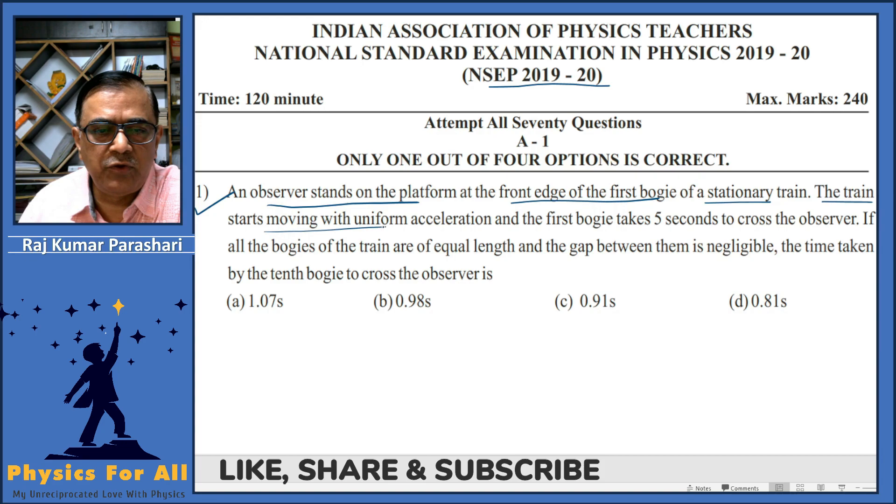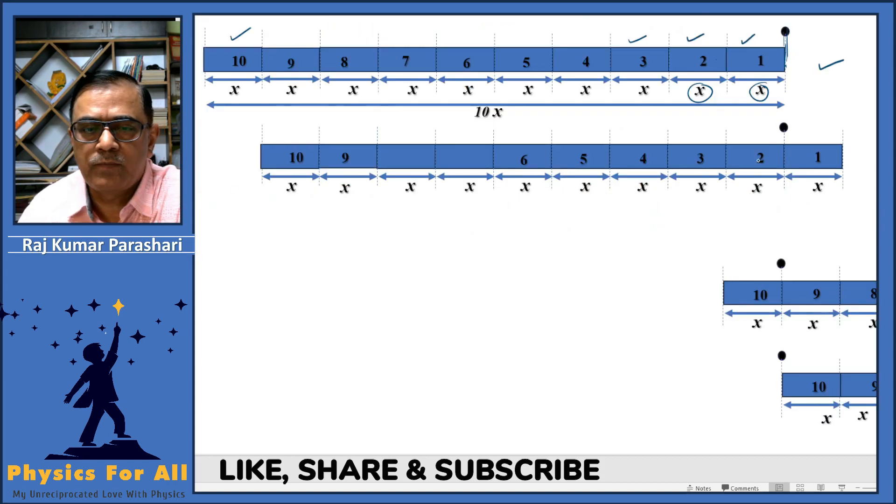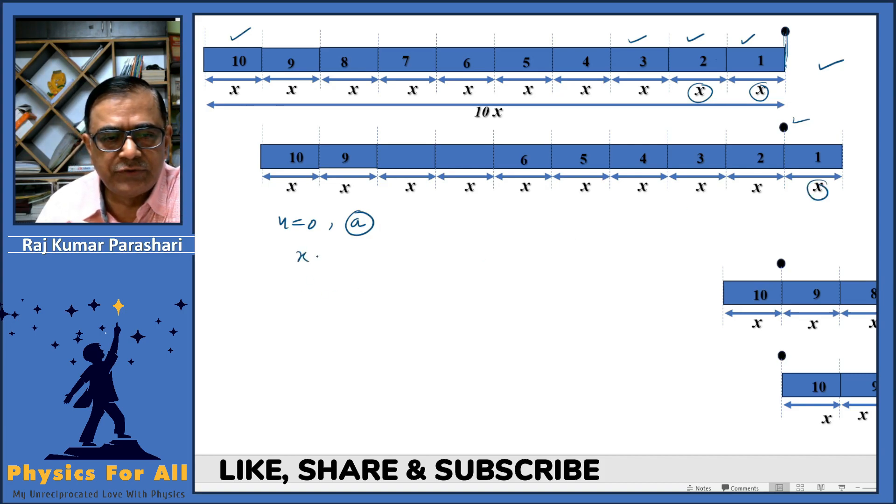The train starts moving with uniform acceleration and the first bogey takes five seconds to cross the observer. The initial velocity of the train is zero and this is following uniform accelerated motion. Let's assume acceleration to be small a. As the first bogey crosses the observer, the distance covered by the train is X, and hence X equals ut plus half at squared. This is further equals to zero plus half a, and the time taken is five, five whole square. This implies the value of X is equals to half a multiplied by 25. This is equation number one.